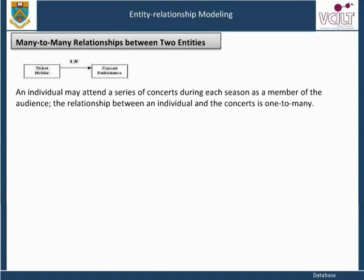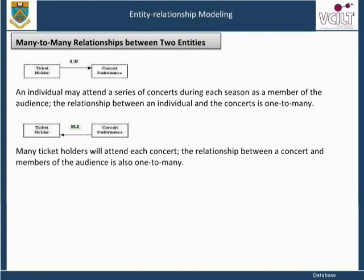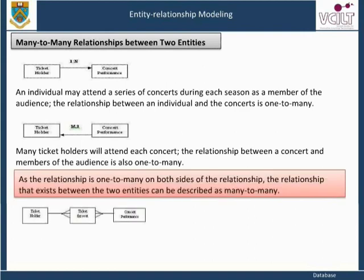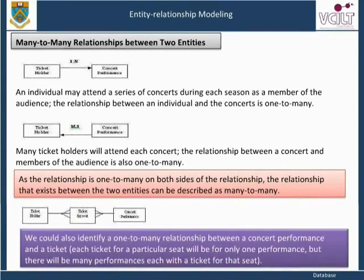An individual may attend a series of concerts during each season as a member of the audience. The relationship between an individual and the concerts is one-to-many. Many ticket holders will attend each concert; the relationship between a concert and members of the audience is also one-to-many. As the relationship is one-to-many on both sides, the relationship that exists between the two entities can be described as many-to-many. We could also identify a one-to-many relationship between a concert performance and a ticket — each ticket for a particular seat will be for only one performance, but there will be many performances each with a ticket for that seat.